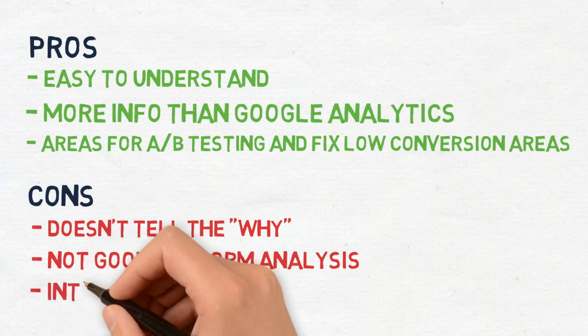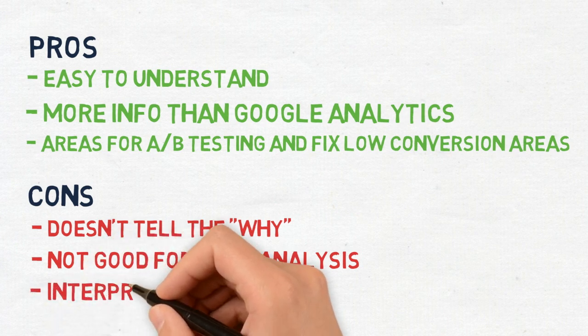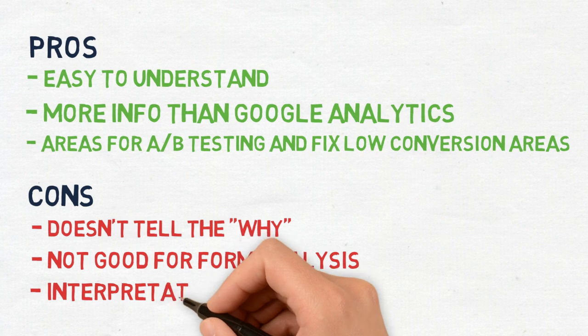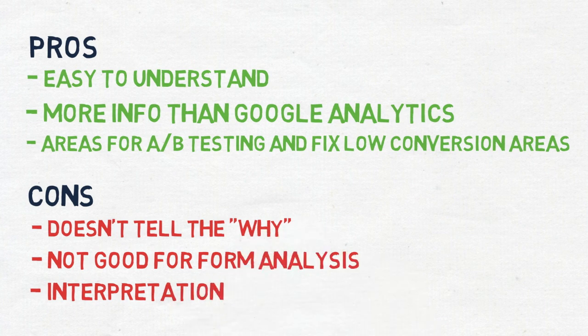Lastly, people can read a lot into each click. For example, it's hard to tell if a person clicked on an element twice whether it means something or if it's an accident.